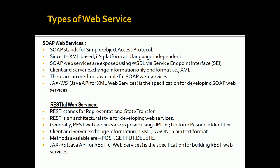Client and server exchange information only in XML format in SOAP-based web services. There are no other methods as such available. JAXWS, that is Java API for XML Web Services, is the specification for developing SOAP-based web services. All new terms such as SOAP, XML, WSDL, SEI, and JAXWS will be covered in detail in the SOAP-based web service tutorial.